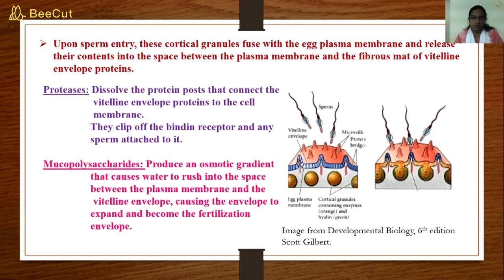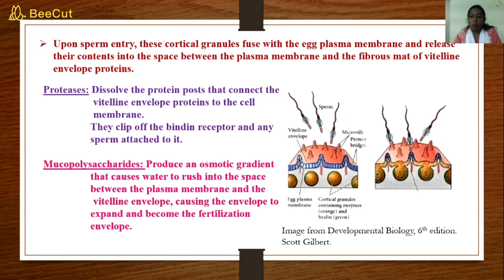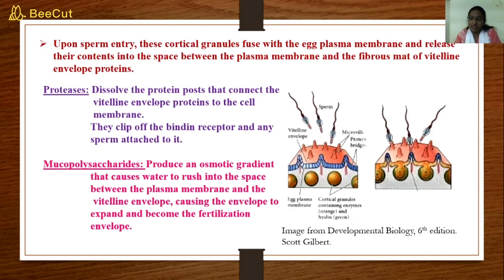The first component released by the cortical granules is protease. There are protein bridges or protein posts present between the vitelline envelope and the egg plasma membrane — these are broken off by the proteases. Moreover, the binding receptors, which are required for initial recognition between sperm and egg, are also clipped off by these proteases.